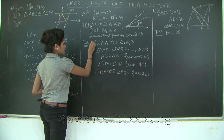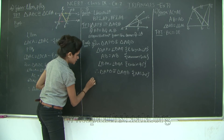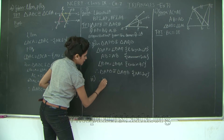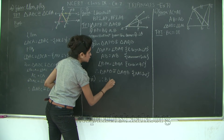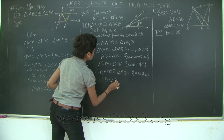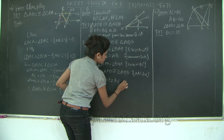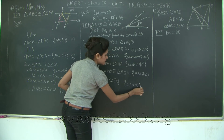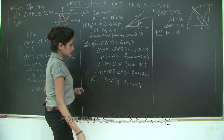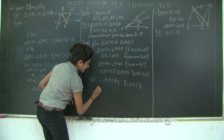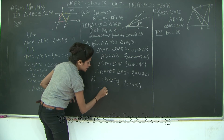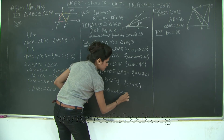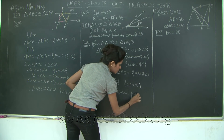So we have proved the first part. Therefore BP is equal to BQ by congruent parts of congruent triangles or CPCT, which implies that B is equidistant from the arms of angle A. Hence proved.